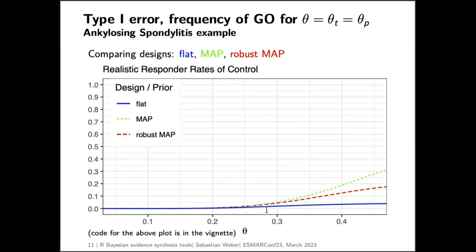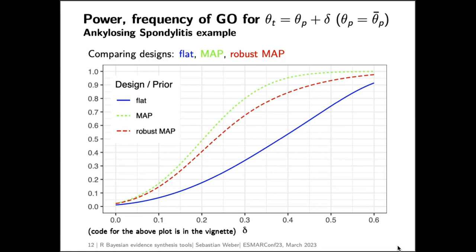In the historical data we saw a response rate of around 25%. Whenever we see a control group response rate of more than 40% in the future, the prior drags the posterior toward what we have seen in the past, leading with some chance to a 'go' decision even though the two rates are the same. The robust MAP is always a compromise between the two. The power — the frequency of a 'go' decision when there is a true difference — shows that using no informative prior has much lower power compared to using the informative priors, with robust MAP again as a compromise.